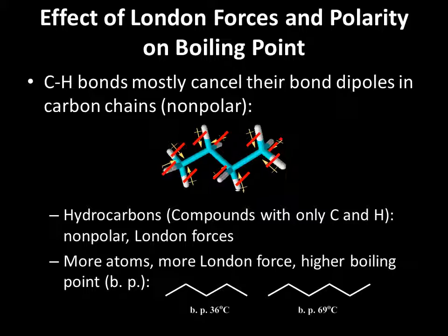If you add another CH2 group, now you have hexane, with a boiling point of 69 degrees Celsius. Adding the extra carbon and hydrogens adds more atoms, which means more electron pairs and more London force, causing the molecules of hexane to be stickier toward each other. That increases their boiling point — it takes more energy to make them fly apart from a liquid to a gas.